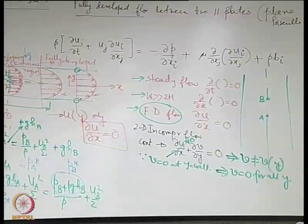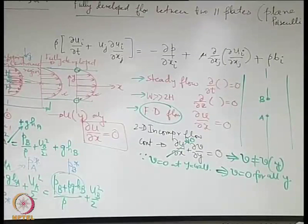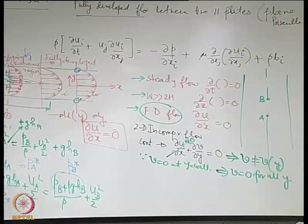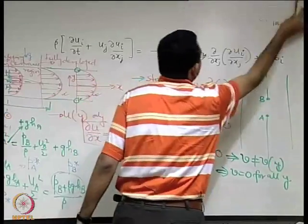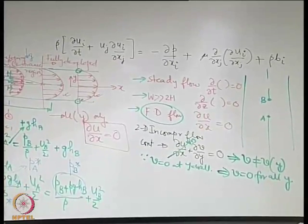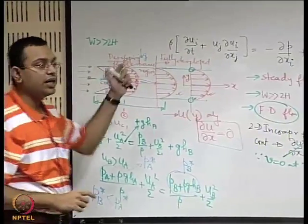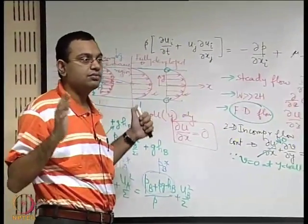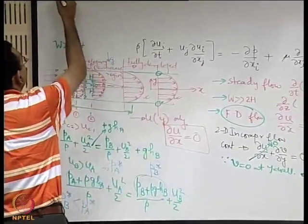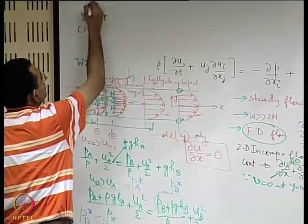Keeping that in mind, let us write the momentum equations — the Navier-Stokes equation. We write it in terms of Cartesian index notation for x and y components. For convenience, we will first write the y component because it will nullify many effects. The y component means i = 2 in the Navier-Stokes equation. So we have ρ times the material derivative of v, where v = u2 is the velocity component along x2, and we also assume constant properties.